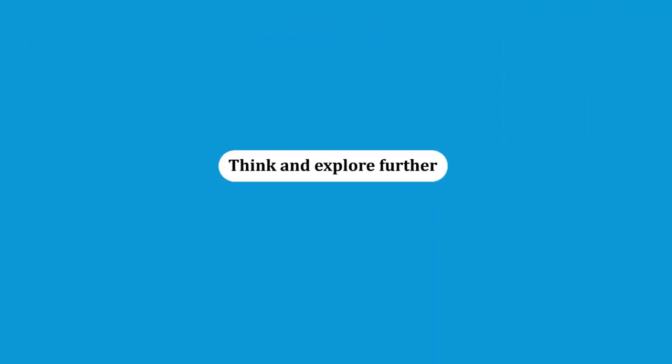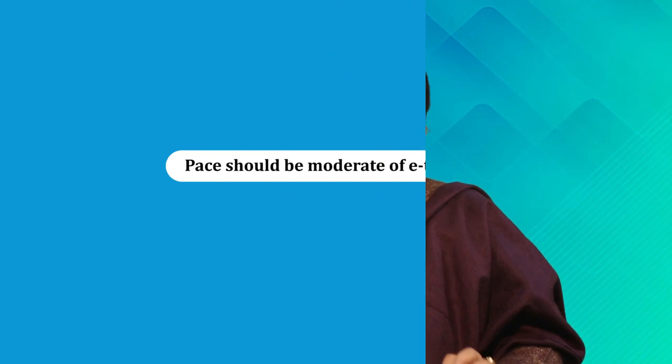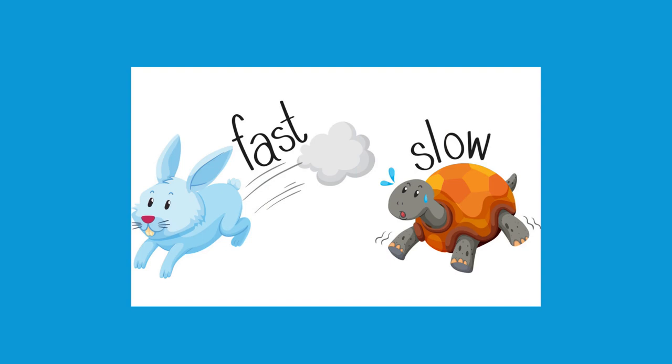Then comes objective formulation, which addresses the question of what we expect learners to be able to do after watching the e-tutorial — what task we stimulate them to think about, explore further, or feel motivated and inspired regarding. For example: after watching this e-tutorial, you will be able to explain the steps in e-tutorial making, write a short script, and conduct a needs analysis. The pace should be moderate — if it's too fast the learner won't understand, and if it's too slow they will lose interest.